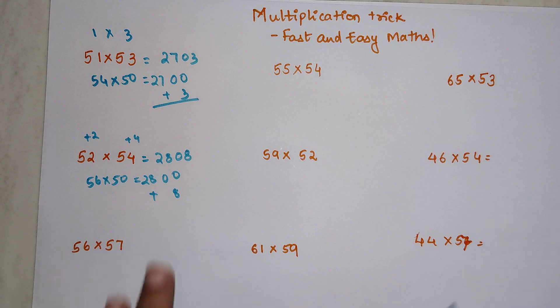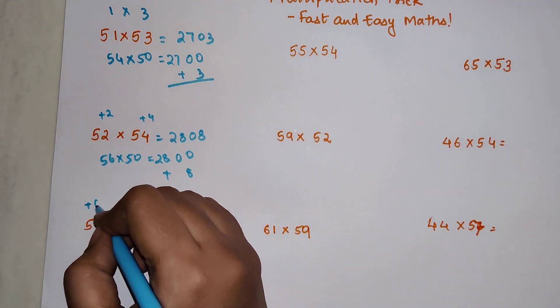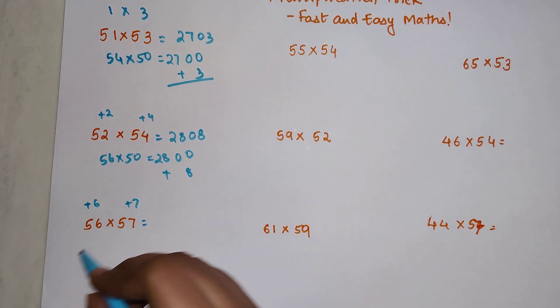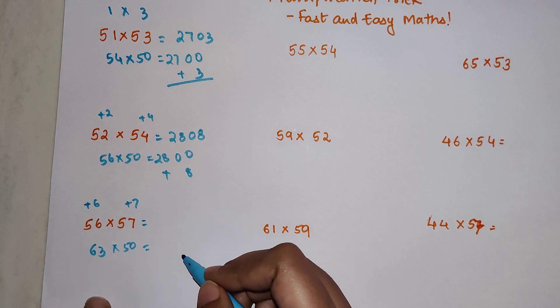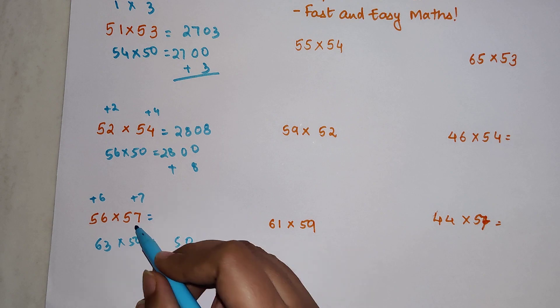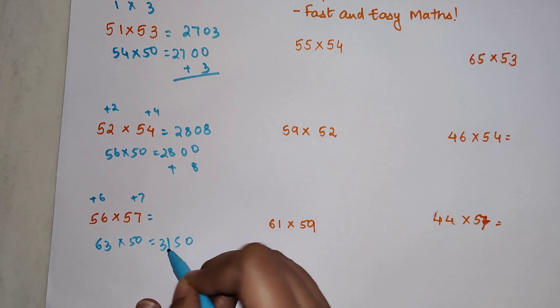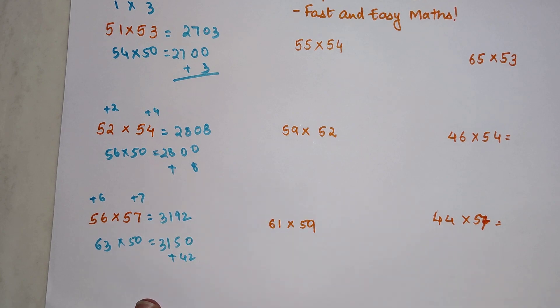Let's do this very quickly. This is plus 6, plus 7, so we get 63 times 50, which is 3150. When you add this to 42, your answer becomes 3192.